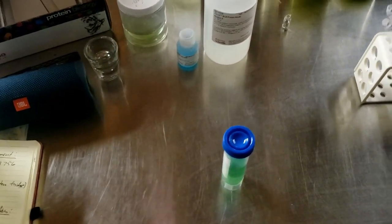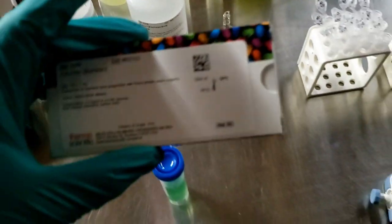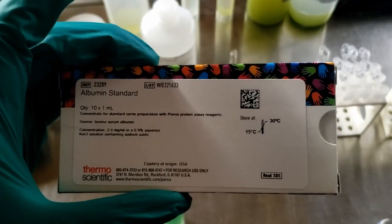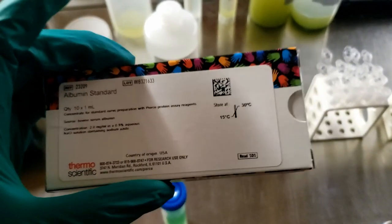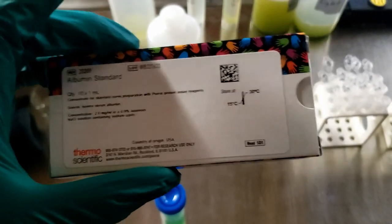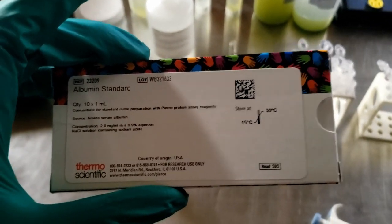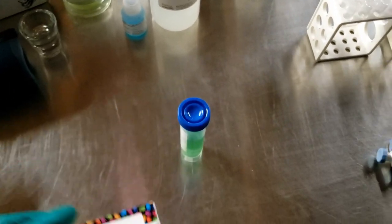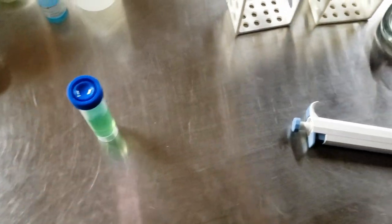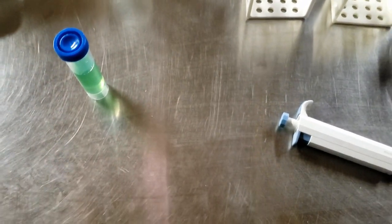In order to run the assay, first what you need to do is prepare your standards. You do that by using these albumin standards. These come with the kit. This is BSA, Bovine Serum Albumin. It's a commonly used standard for protein assays.